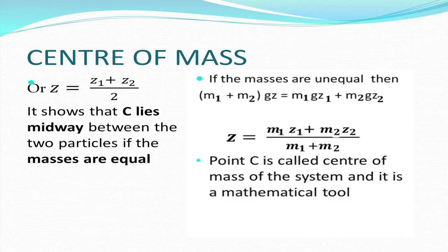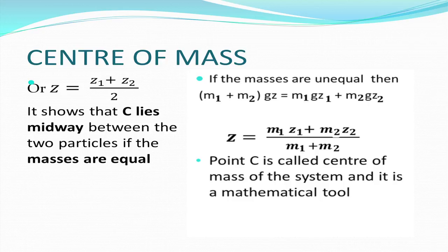This means that for the center of mass, z equals (z1 + z2) / 2, showing that C lies midway between the two particles when masses are equal. When masses are unequal, the equation changes: (m1 + m2) × g × z equals m1gz1 plus m2gz2. Rearranging, we get z equals (m1z1 + m2z2) / (m1 + m2). Therefore, point C has this coordinate and is called the center of mass of the system — it is essentially a mathematical tool.